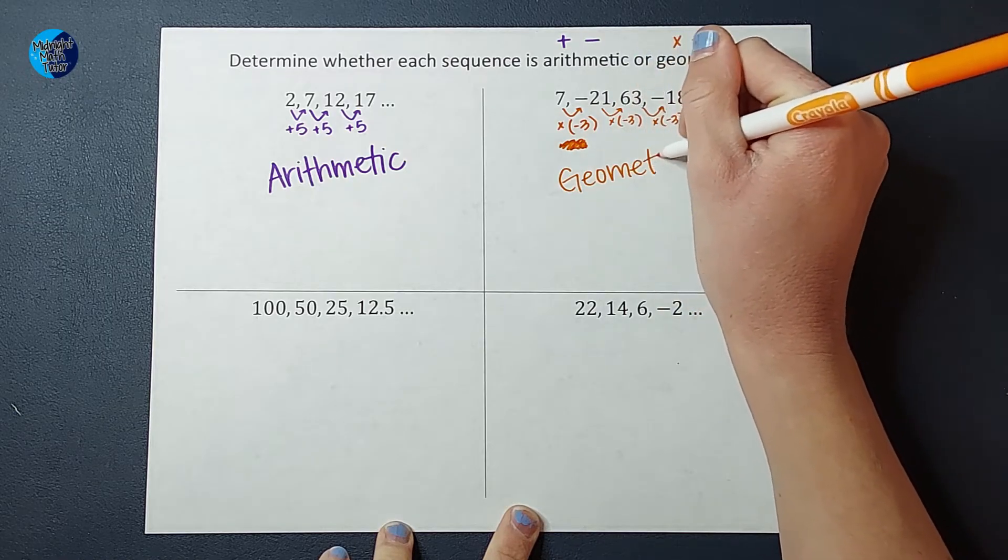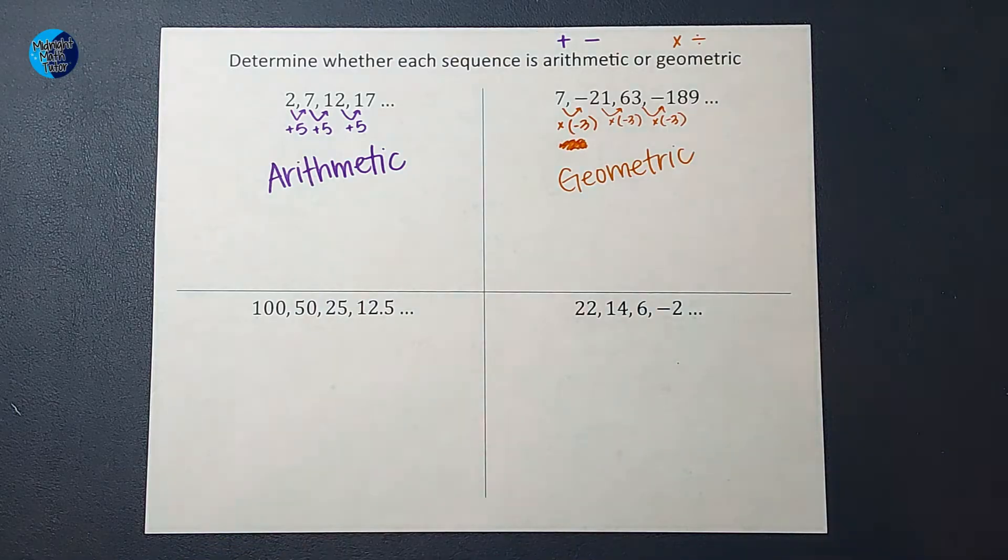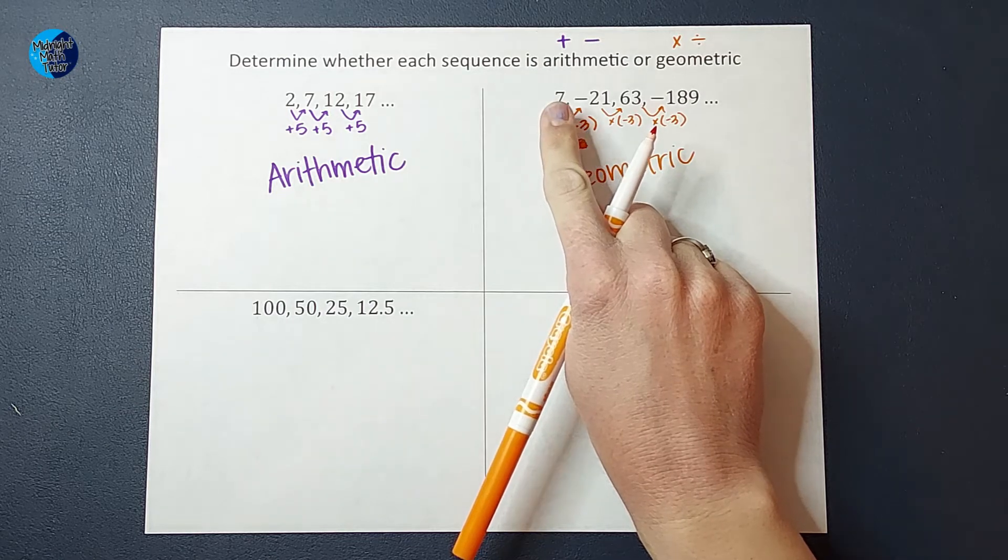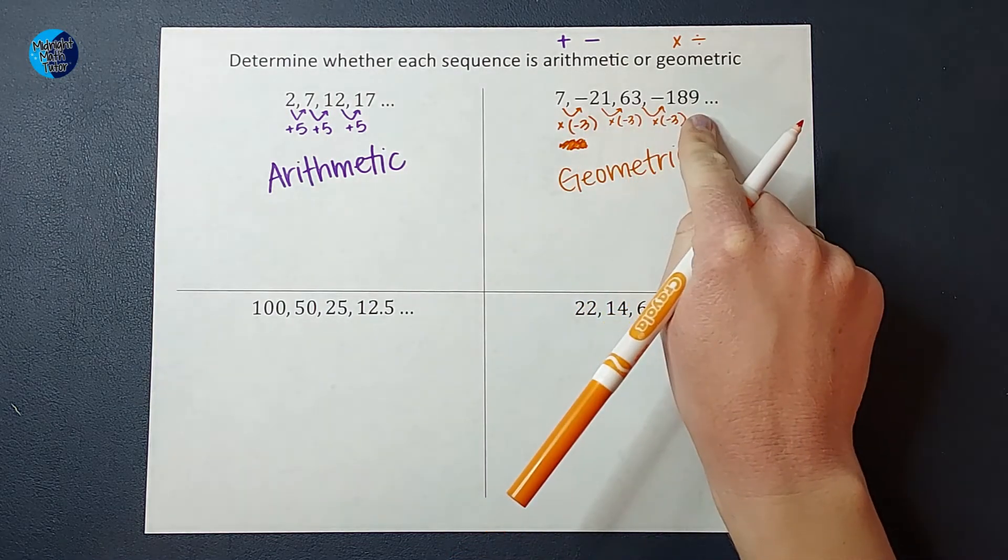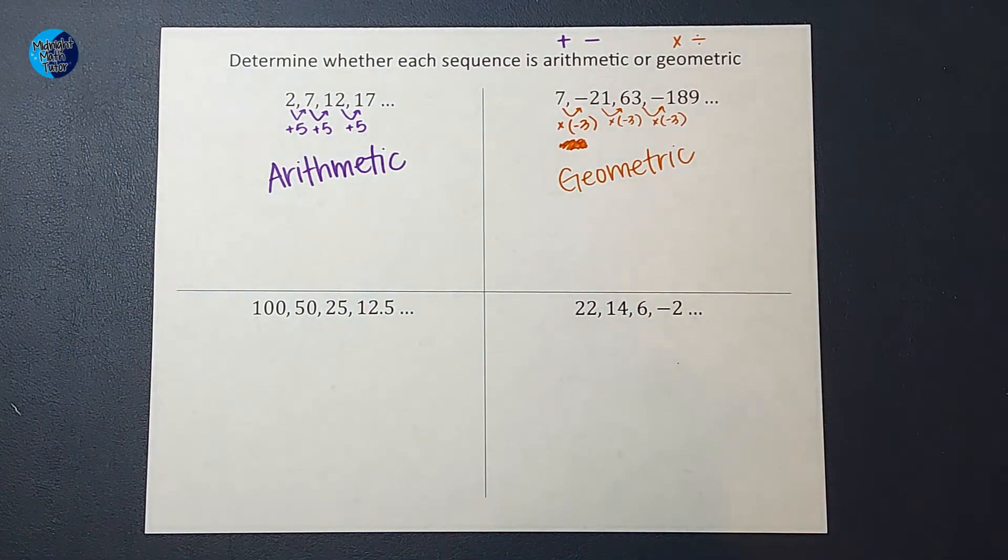Just as a side note, we probably could have been able to tell that without even figuring out that it was multiplying by three. And the reason is because it switches from positive to negative, positive, negative, positive, negative, which is a pretty sure sign that we are dealing with a geometric sequence.